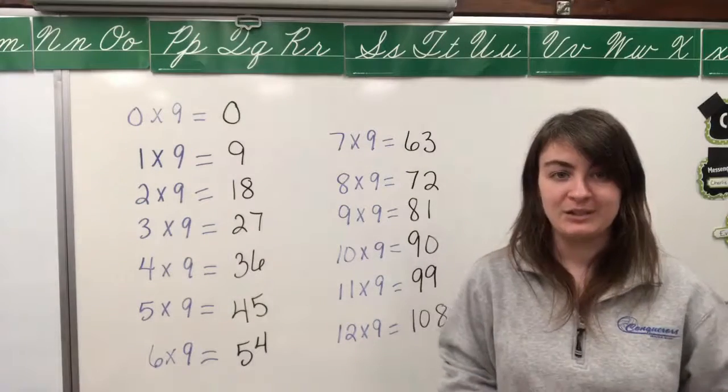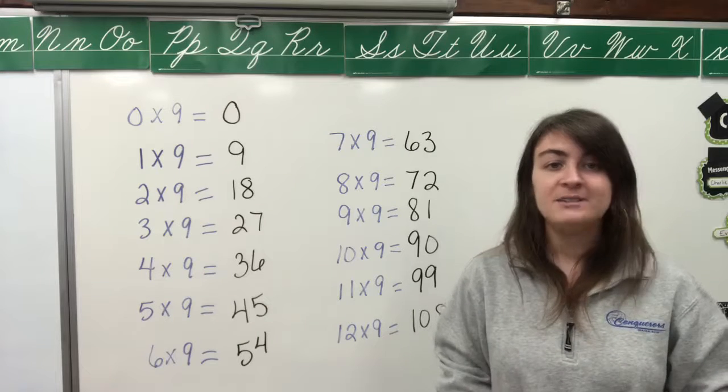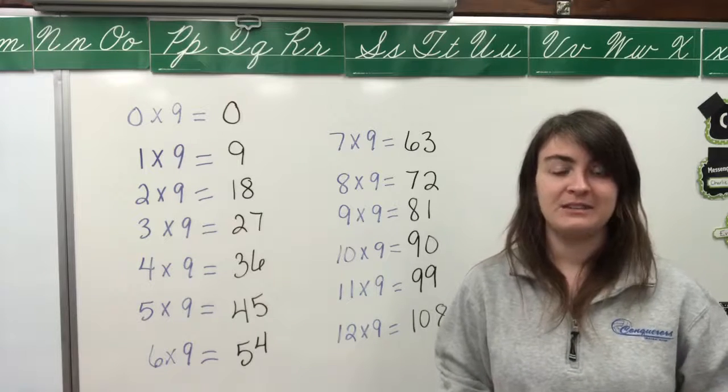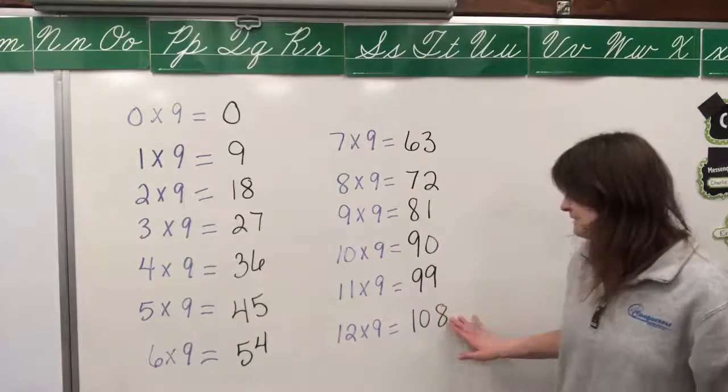So we can take those numbers and divide them by nine. A hundred and eight divided by nine equals...